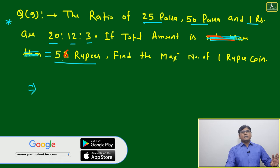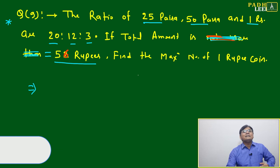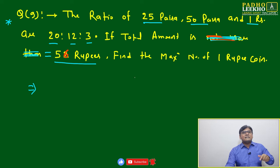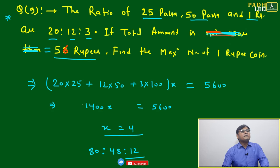I told already, if sum is given, no need to worry, you will be able to solve it. Here also sum is given - 56 rupees. This 56 rupees is given in three denominations: 25 paise, 50 paise, and 1 rupee coins. We can write the question in form of sum.